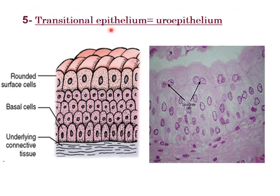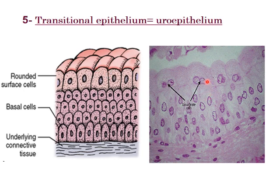Transitional epithelium, also called urothelium, lines the urinary system. It has the capacity to change its number of layers as needed in organs liable for distension like the urinary bladder. It is formed of basal columnar cells, middle polygonal cells, and a top layer of dome-shaped cells with rounded apical surfaces that may be binucleated.